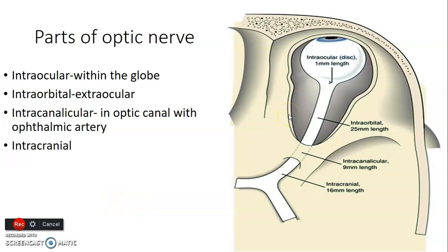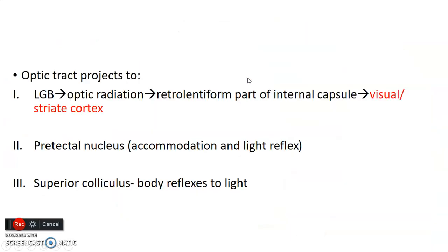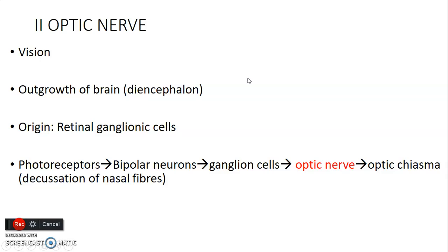Hello, it's Dr. Omine. We had started the second cranial nerve, but I'll take you back so that we have some flow. The second cranial nerve is the optic nerve, responsible for vision, and it's usually an outgrowth from the diencephalon.